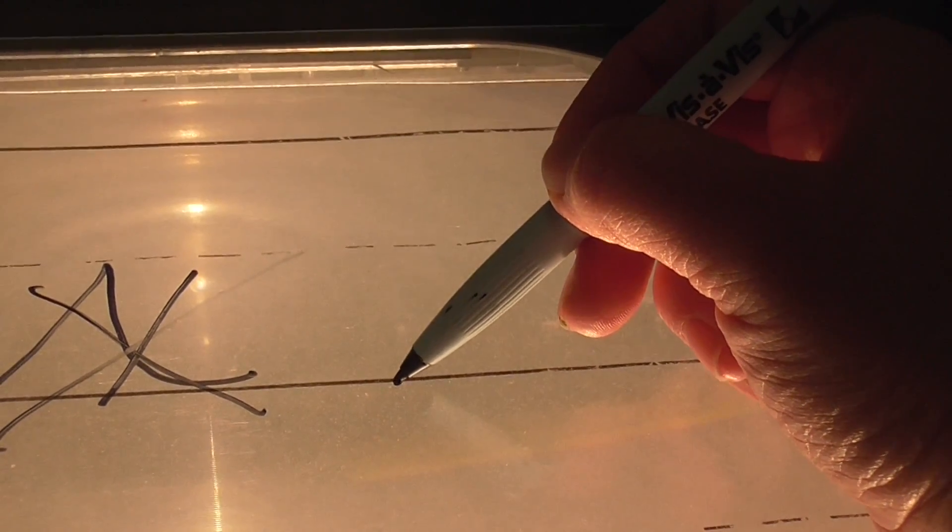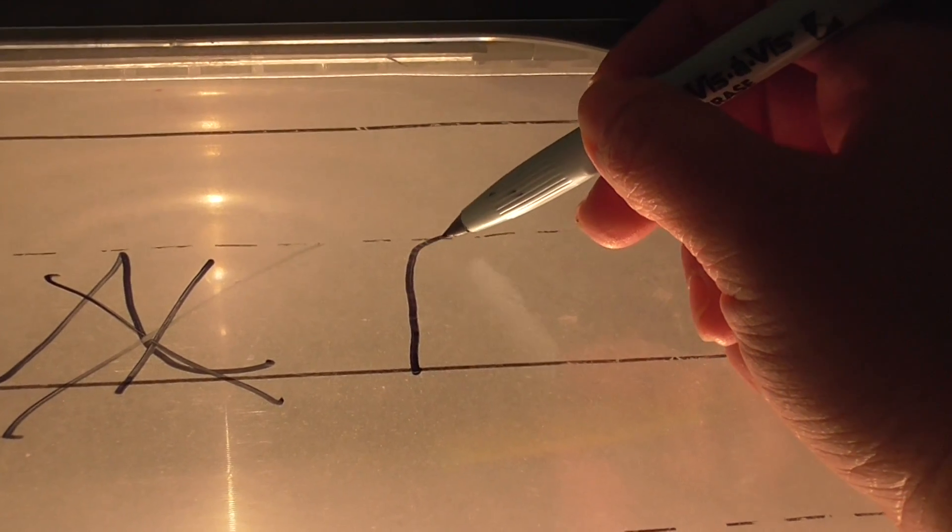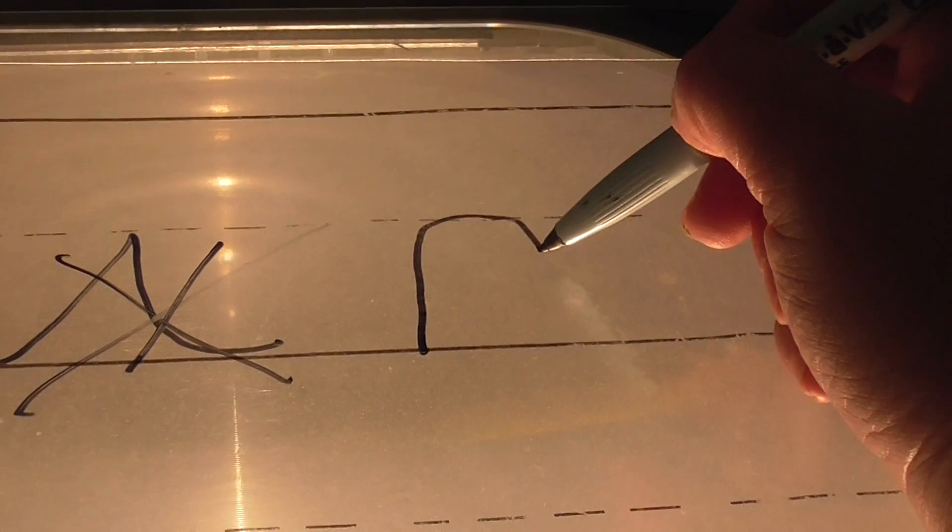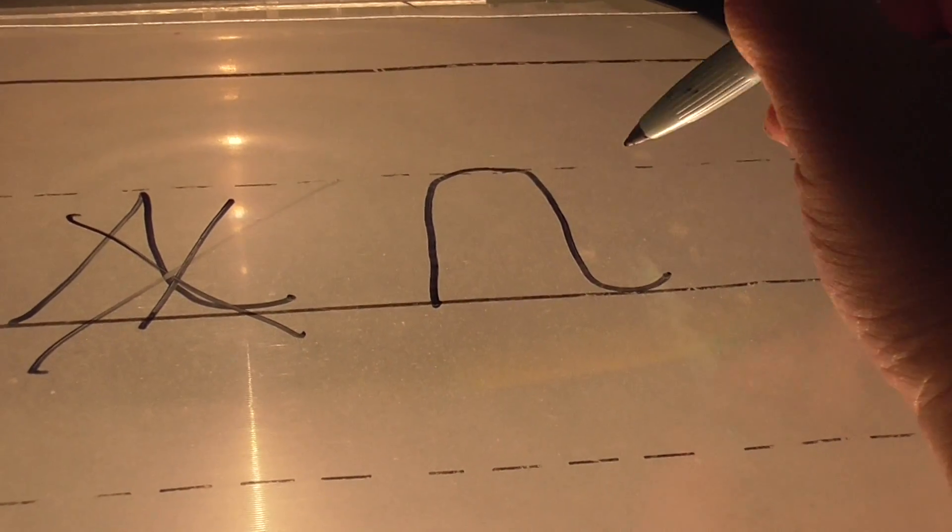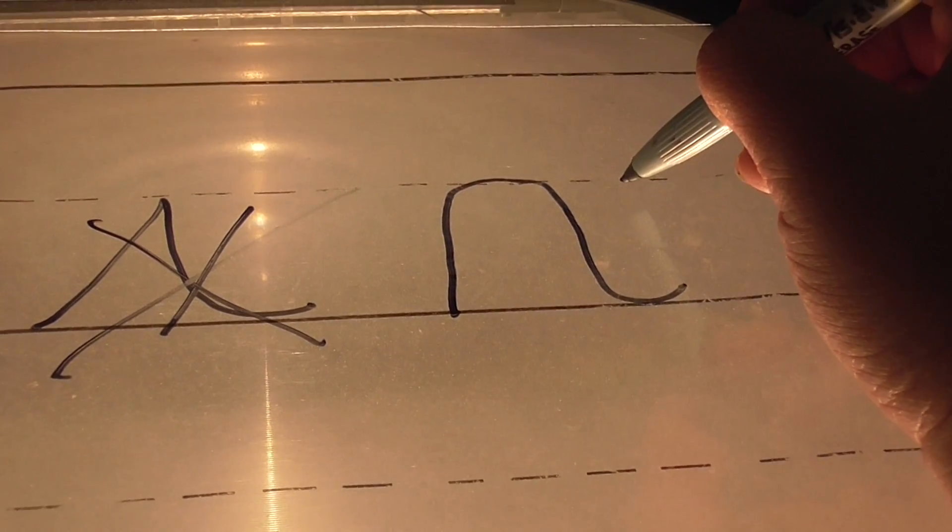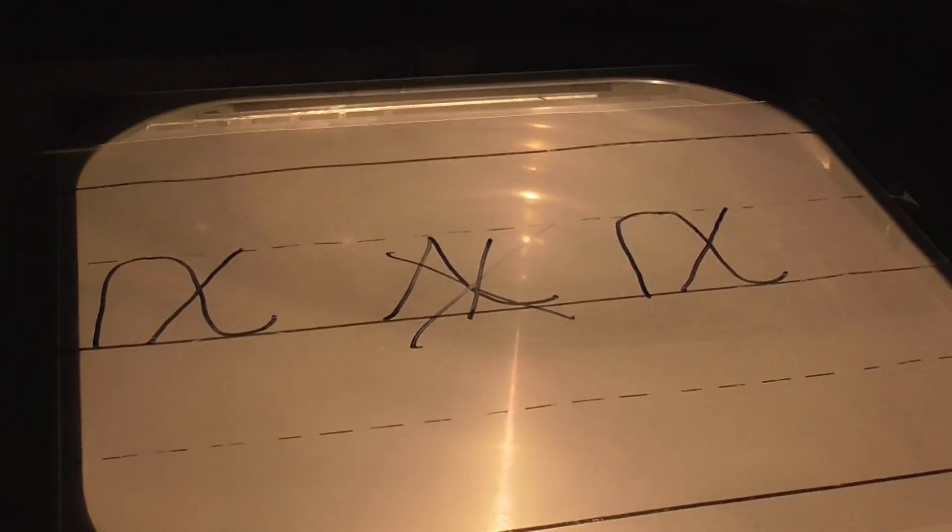Start on the bottom baseline. Up, up, up, up, up. Touch. Make it round and beautiful. Connector stroke. Lift. Start on the middle dotted line. Cross. Good.